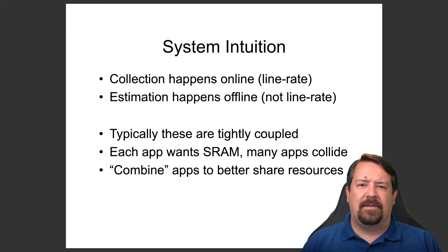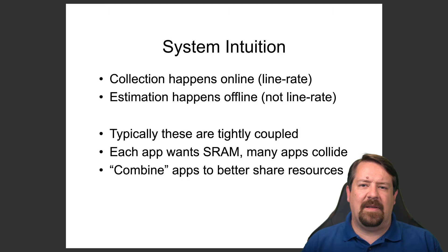As we saw with the NetFlow architecture, collection happens at line rate, and then the flow data is shipped off to a collector that does things in the background — not at line rate. Looking at the hardware of the interfaces, there's a very scarce amount of SRAM, which is the memory fast enough to keep up with events happening at line rate. If each application needs some of this SRAM, it becomes a very scarce, oversubscribed resource. The idea is to make applications share measurements the SRAM can perform, rather than each needing its own piece.